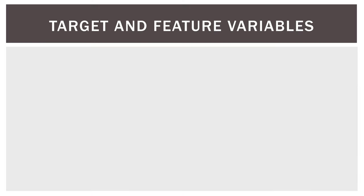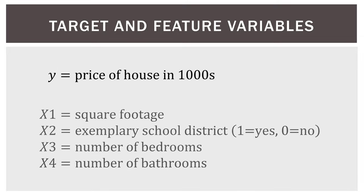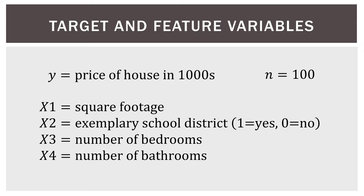The first thing we should do is understand the data we're going to use in this video. This is housing data that's loosely based off house prices and features in the general area where I live — a mix of real world data with some modifications. Our dependent variable, or target variable, Y, is the price of a house. We have four feature variables: X1 is square footage, X2 is a binary variable for whether the home is in an exemplary school district, X3 is number of bedrooms, and X4 is number of bathrooms. Our sample size is 100 observations.